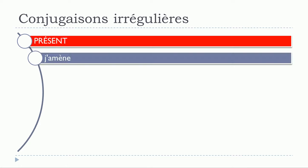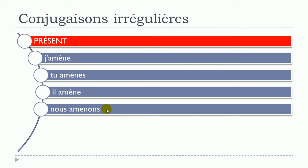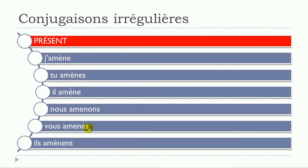We'll start with le présent: j'amène, tu amènes, il amène, nous amenons, vous amenez, ils amènent. We can see that je, tu, il, and ils are concerned by this little change — it's only the accent grave on top of this 'e'. It changes the pronunciation: you get this open 'a' sound — amène, tu amènes, il amène.